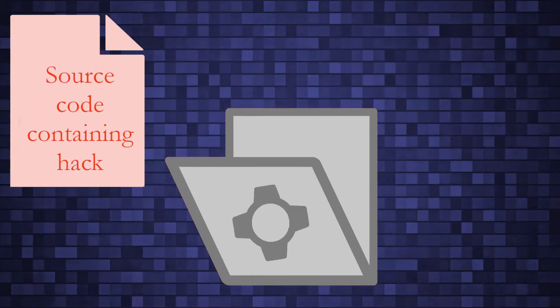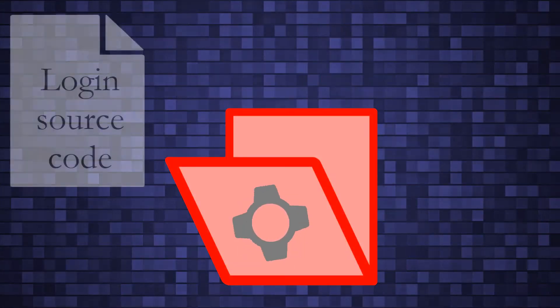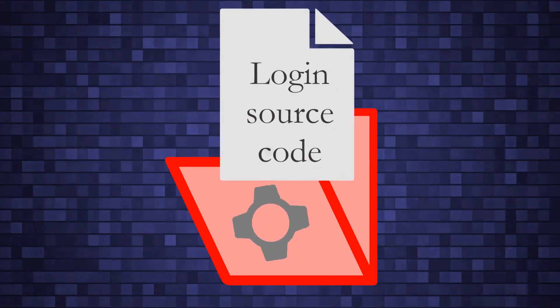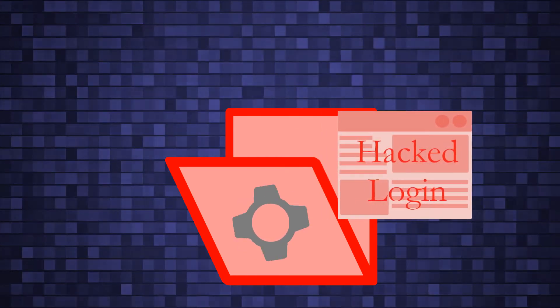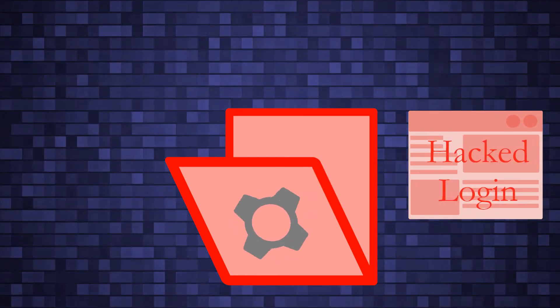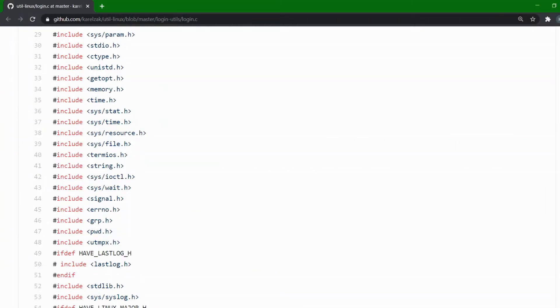The Ken Thompson hack works like this: the hack would insert some backdoor code into a compiler, so that every time the login application was compiled, the compiler would insert the same backdoor code into the login application. Such backdoor code in the login application is easy to write; however, it is also easy to find by anyone reading the source code. Ken Thompson came up with a more dastardly way to hide this hack — he hid it in the compiler itself, so that anyone reading the source code of the login application would not find the hack.